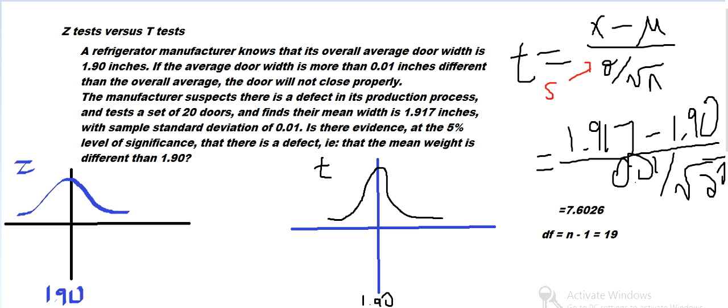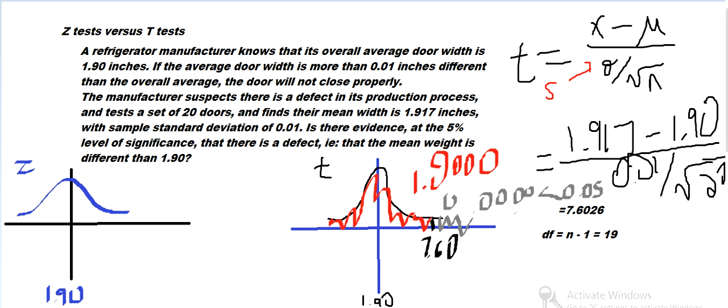So we're up at 7.60. That's telling us the probability less than that is basically 1, 1.000. And that means the right tail, this area here, is basically 0.000. And that's less than 0.05. So the probability of that occurring is very unlikely if the overall mean is 1.90.